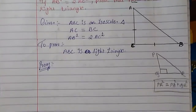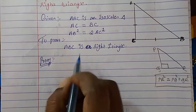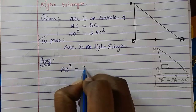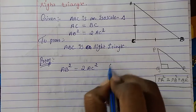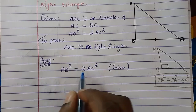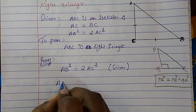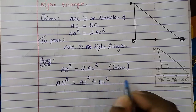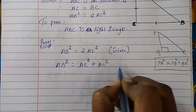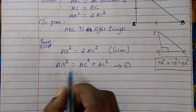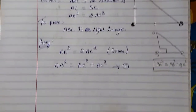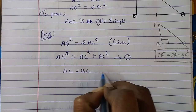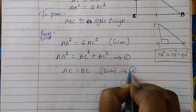Proof. What is given to us: AB square is equal to 2 times AC square. We can write this as AB square equals AC square plus AC square — let us call this equation 1. Then, AC is equal to BC — let us call this equation 2.